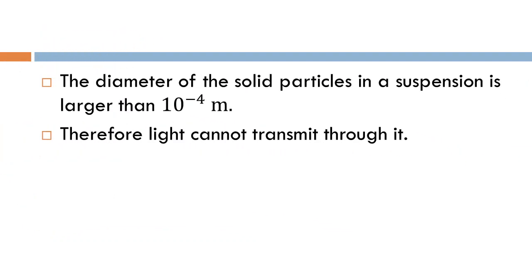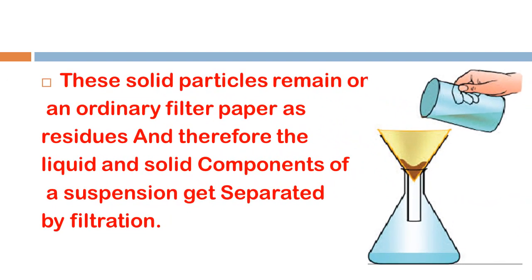The diameter of solid particles in a suspension is larger than 10 raised to minus 4 meters. You can easily see the particles. Because the particles are so large, light cannot be transmitted through the suspension.